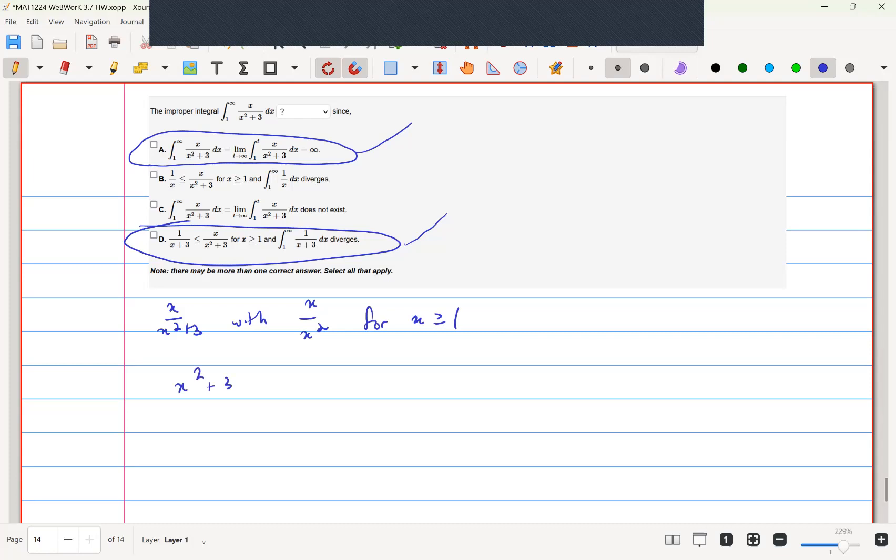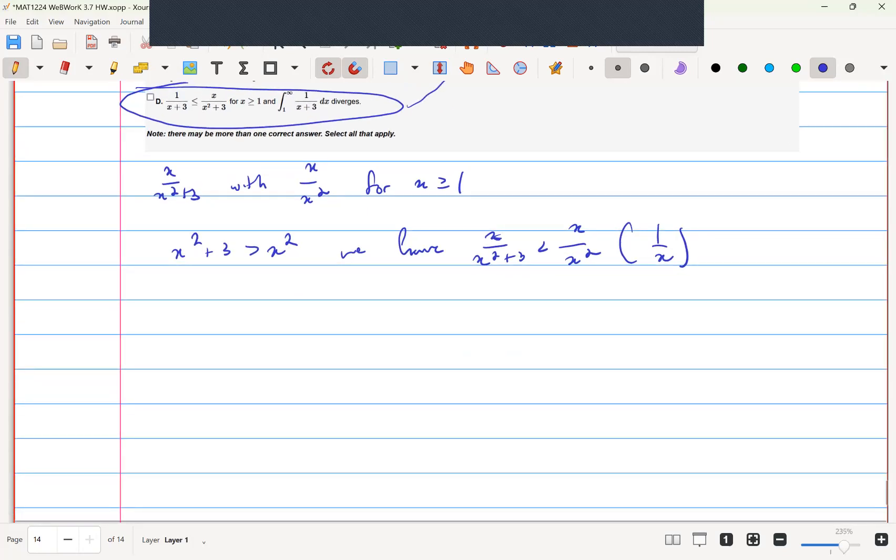Since x squared plus 3 is greater than x squared, we have x over x squared plus 3 less than x over x squared, which is just 1 over x.